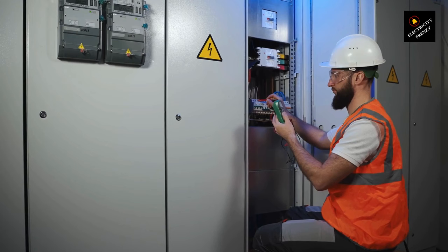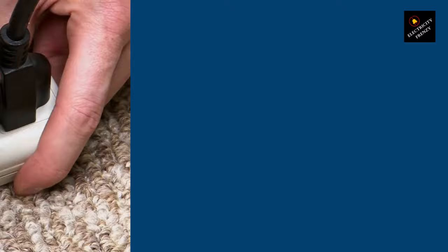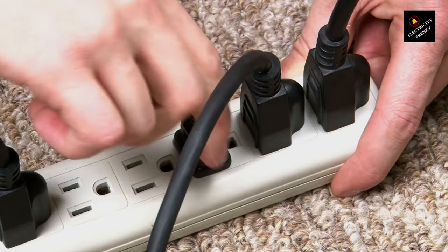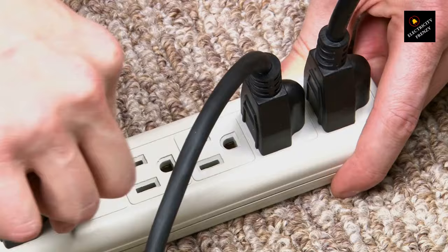Number one: Overloaded circuit. Dishwashers typically draw a significant amount of power when they are in operation. If the dishwasher is connected to a circuit that already has a heavy load, such as other appliances or devices, it may exceed the circuit's capacity and trip the breaker.